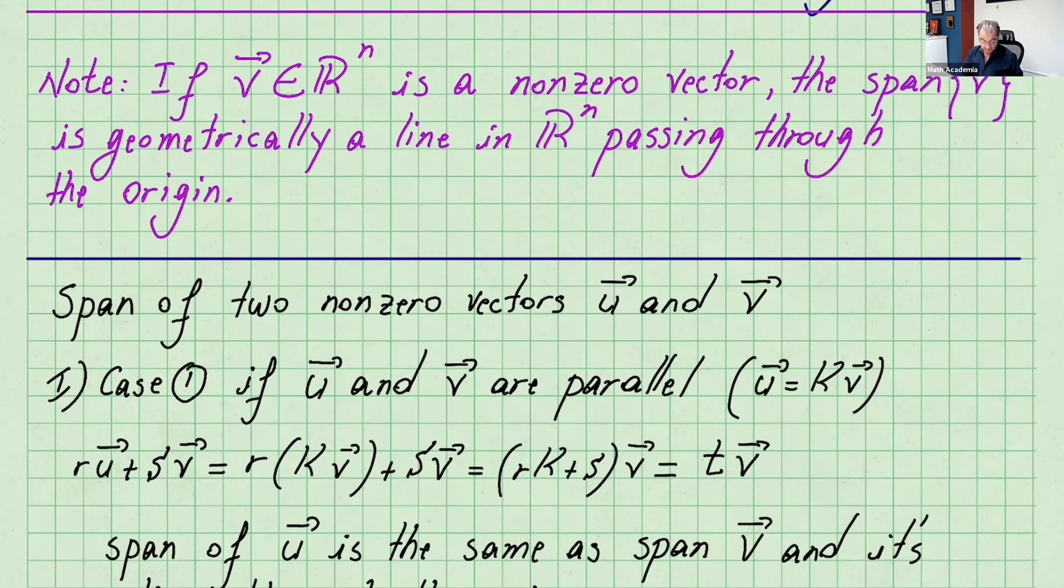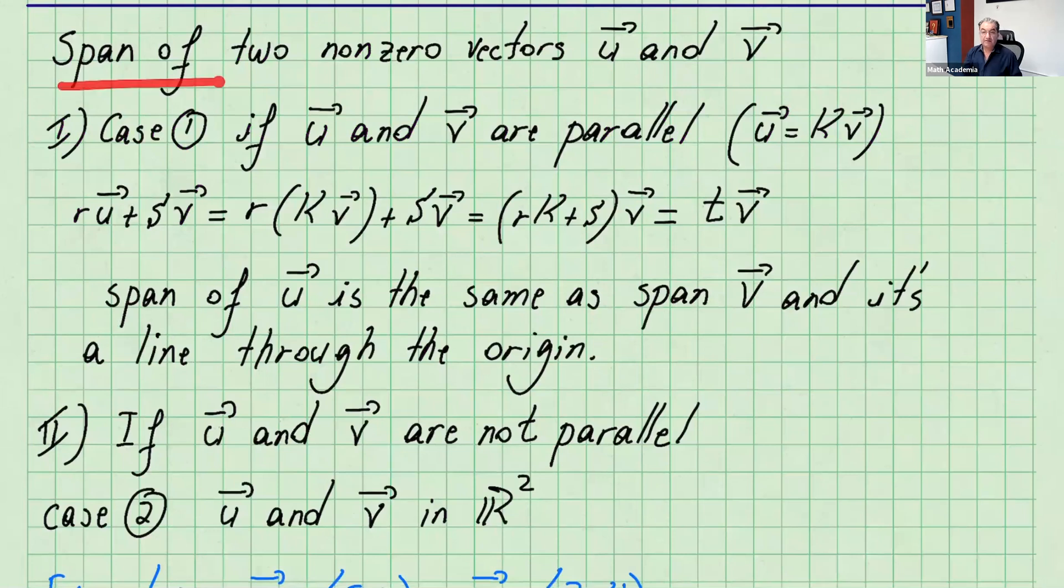Now let's talk about span of two non-zero vectors, u and v, and we're going to analyze different cases. The first case: if u and v are parallel, that means they are scalar multiples of each other. So I'll put u equals k times v. If we write ru + sv, that's r times kv plus sv. You can factor out v and get (rk + s)v, and rk + s is just a constant itself, so you can write tv. Conclusion: span of u is the same as span of v, and it is a line through the origin. So that's in case the vectors are parallel.